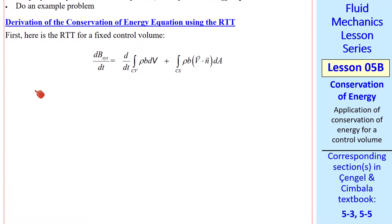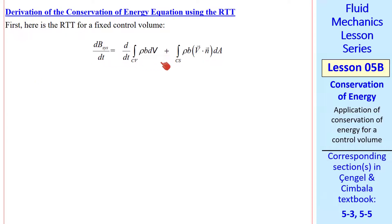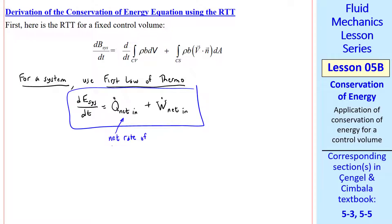We start with the Reynolds Transport Theorem for a fixed control volume. For the system, we'll use the first law of thermodynamics: dE_sys/dt equals Q̇_net_in plus Ẇ_net_in. This term is the net rate of heat transfer into the system, and this term is the net rate of work done on the system. When either of these terms is positive, you're adding energy to the system.